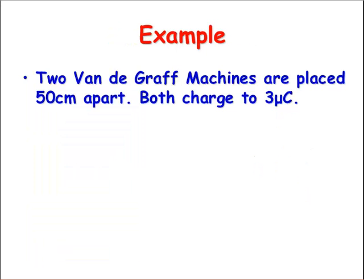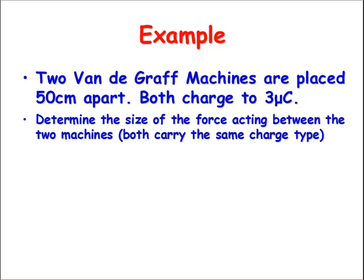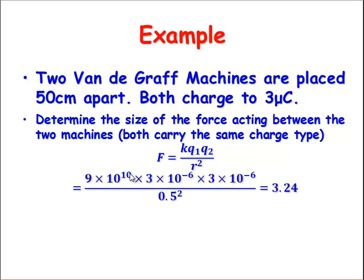Let's consider an example. We've got two Van de Graaff machines. They're 50 centimeters apart. We rev both of them up. They're charging about 3 microcoulombs. Determine the size of the force. Using that equation and substituting in, we've got 9 times 10 to the 9, that's our constant, times charge 1 times charge 2 divided by the distance squared. It comes out at about 3.24. I forgot to put my units in, but that should be in Newtons.